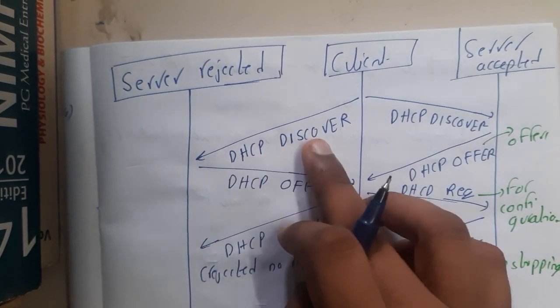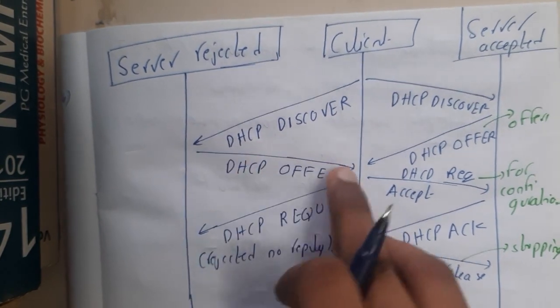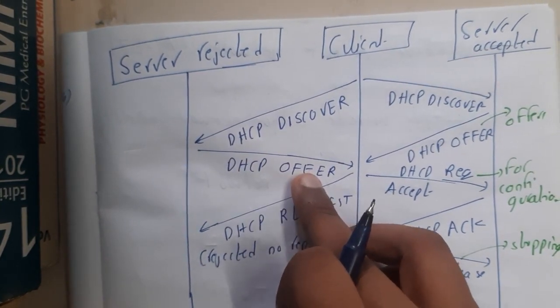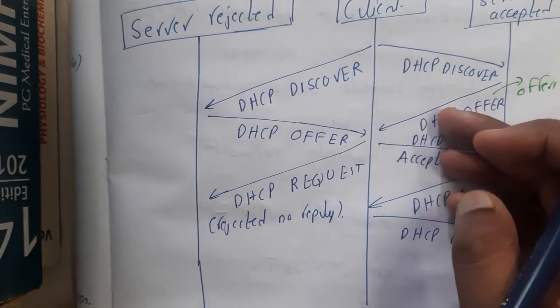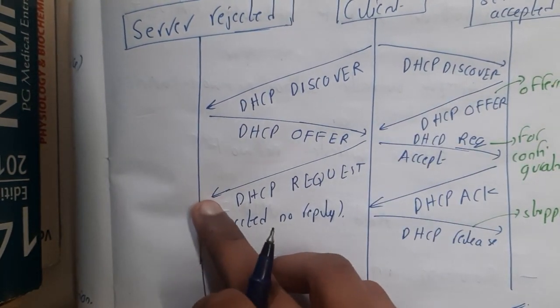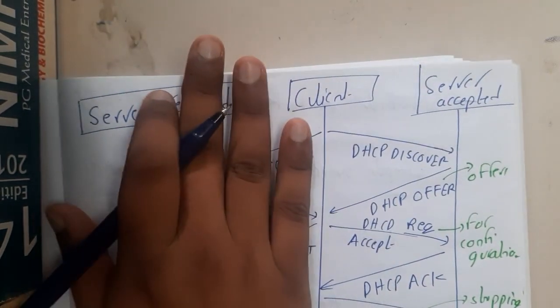Firstly, you sent a DHCP discover request. Once the server received it, the server sent you offers - what IP addresses are available. You told that you want an IP address with this configuration, but that IP address is not available here, so it will directly reject it.